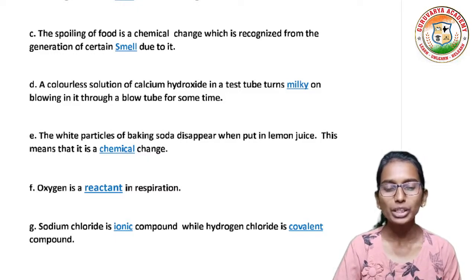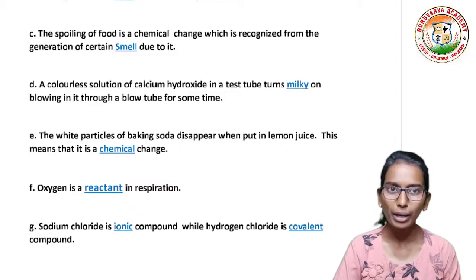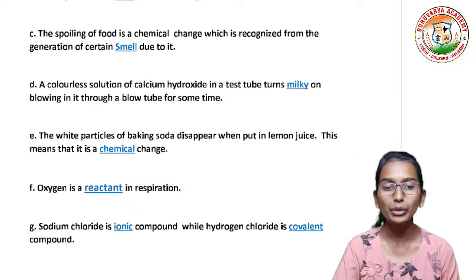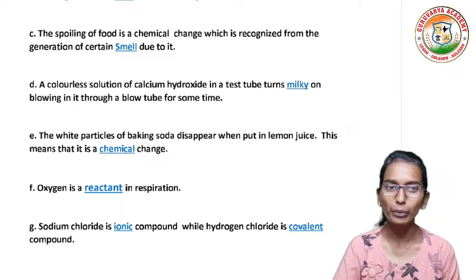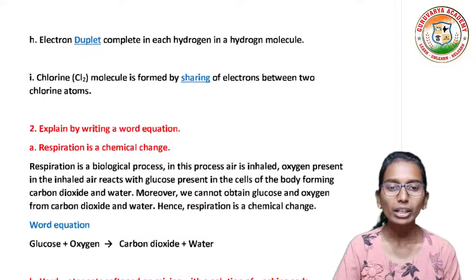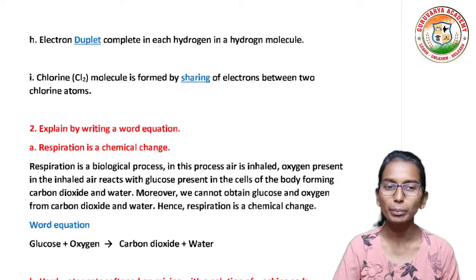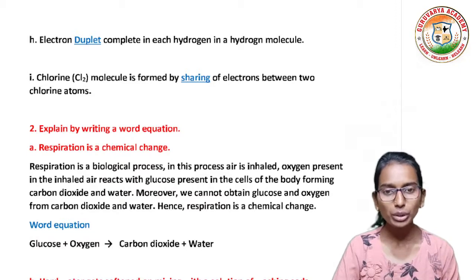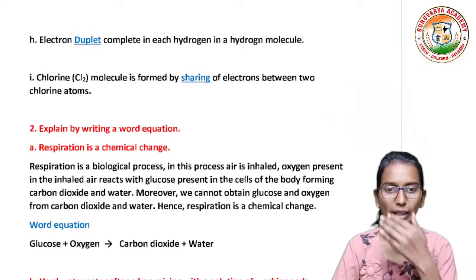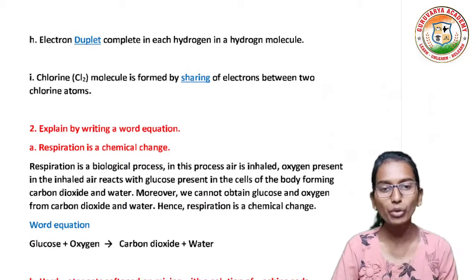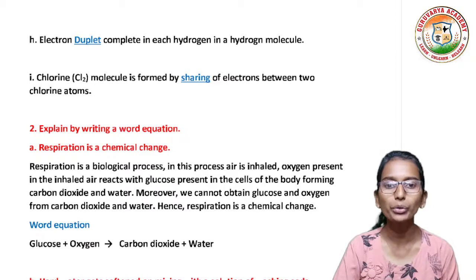Seventh blank: sodium chloride is a dash compound while hydrogen chloride is a dash compound. Answer: Sodium chloride is an ionic compound and hydrogen chloride is a covalent compound. Eighth blank: electrons complete the duplet in each hydrogen in a hydrogen molecule. Answer: Duplet. Ninth blank: chloride molecule is formed by dash of electrons between two chloride atoms. Answer: Sharing.